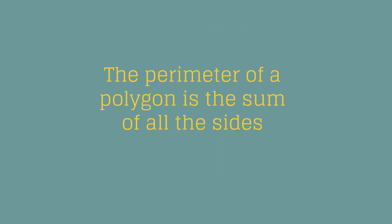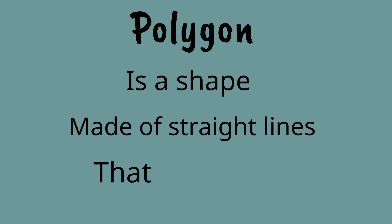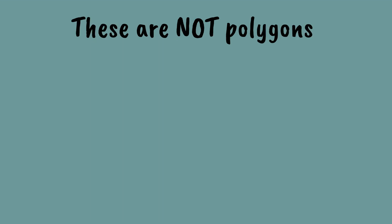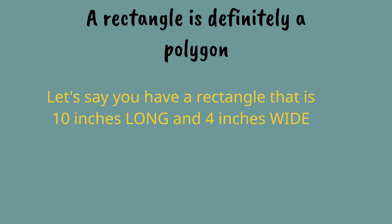The perimeter of a polygon is the sum of all the sides. You might be wondering what does that mean? A polygon is a shape made of straight lines that is closed. Here are some polygons: a rectangle, a pentagon, a triangle. All of these are shapes made of straight lines and are closed. These are not polygons: a circle has no straight lines. This is not a polygon because it is not closed. Now this is closed and has a straight line, but it also has some lines that aren't straight, so this is not a polygon either.